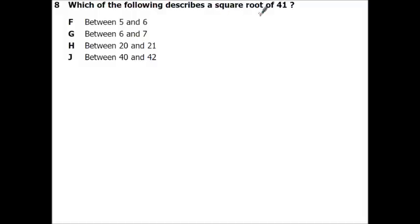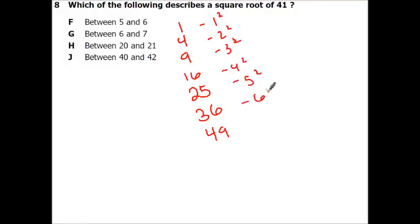Which of the following describes the square root of 41? Now we can do this without a calculator because we just know our perfect squares. So we have 1, 4, 9, 16, 25, 36, and 49. So this is 1 squared, 2 squared, 3 squared, 4 squared, 5 squared, 6 squared, and 7 squared. So we can know that the square root of 41 is going to be between 6 and 7 because 41 is between 36 and 49.